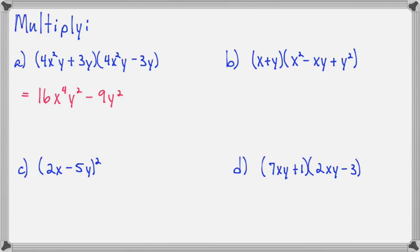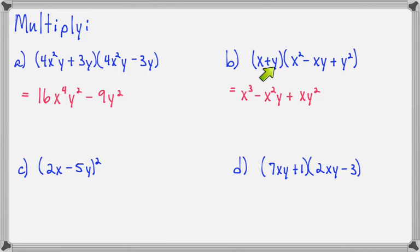For part B, we can't use the FOIL method or any of our shortcuts because this is not two terms times two terms. So we'll use the straight distribution method, distributing the x, then the y. x times x squared will be x to the third. x times negative xy will be negative x squared y. And x times y squared will be plus xy squared. Now distributing the y: we'll keep our variables in the same order every time, so instead of writing y x squared, I'll write x squared y. Then y times negative xy will be minus xy squared, and y times y to the second is y to the third.